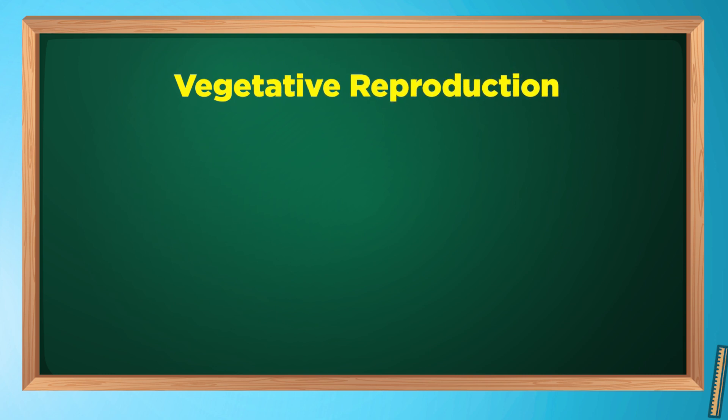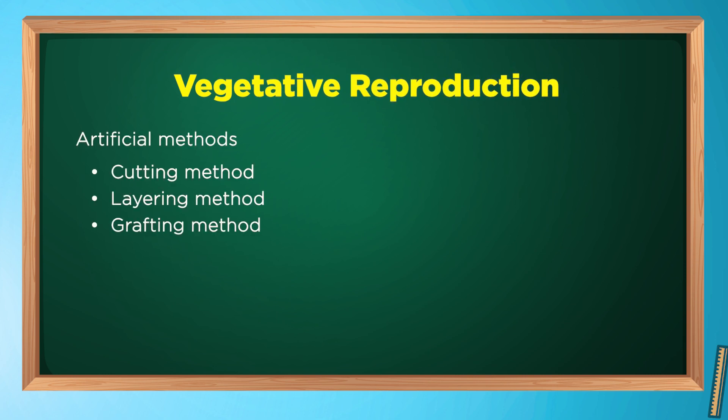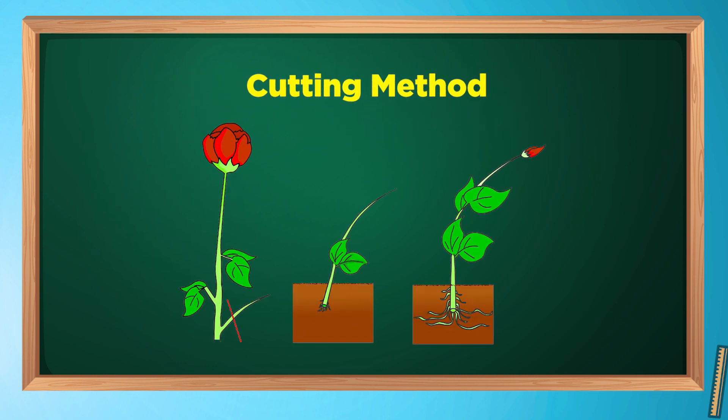We also use some artificial methods of vegetative reproduction to grow new plants. Some of them are cutting, layering, and grafting methods. Let's discuss the cutting method first. If we cut a part of the rose stem and place it in moist soil, sometimes roots will grow from it and a new plant will be produced.